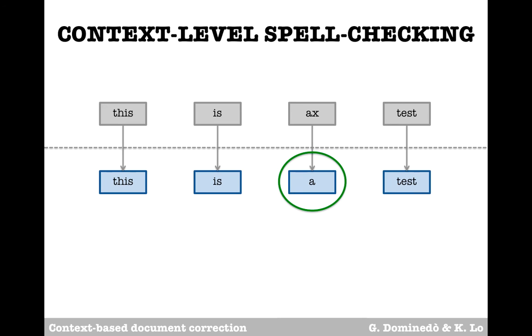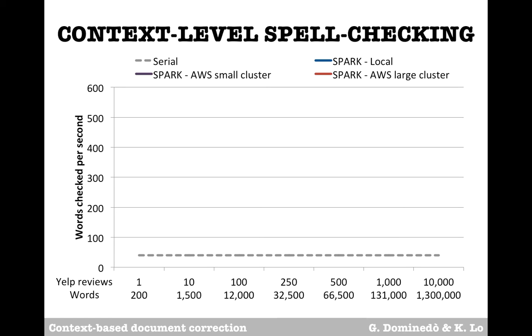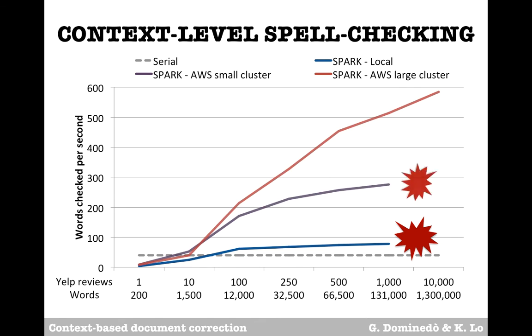These serial algorithms were used as baselines for new implementations in Spark. As expected, the serial versions excelled at checking small documents but lagged behind as document sizes increased. There was also a limit to the file sizes that could be processed locally due to memory constraints, prompting us to move our Spark solutions to AWS. There we realized much improved times, but noticed that simply increasing the number of partitions or workers did not always result in proportional gains. Ultimately, it became clear that the optimal parameters depended highly on document sizes and the specifics of the algorithms employed.